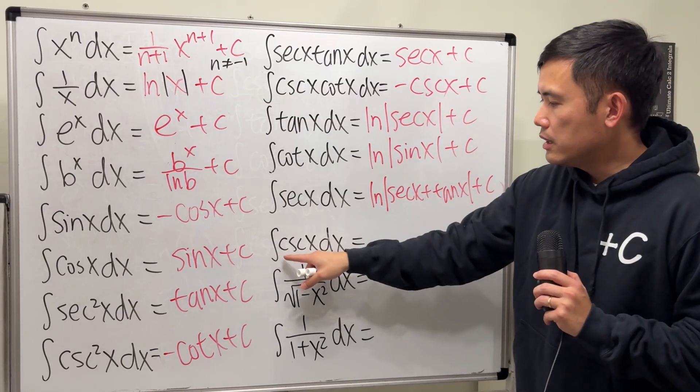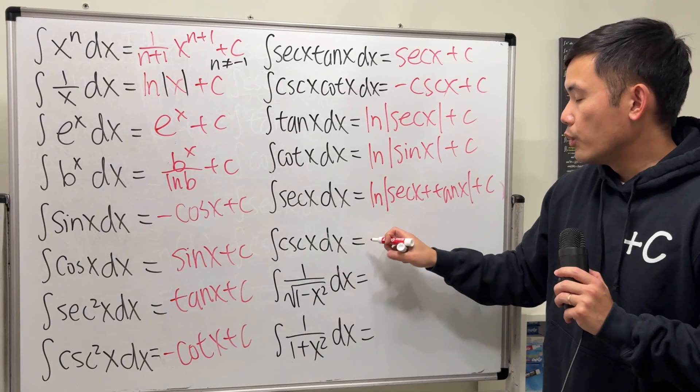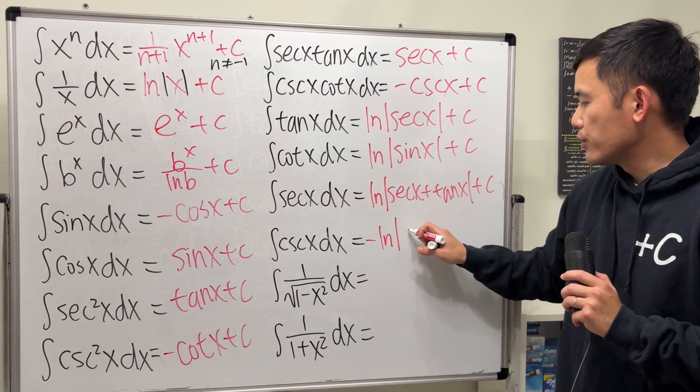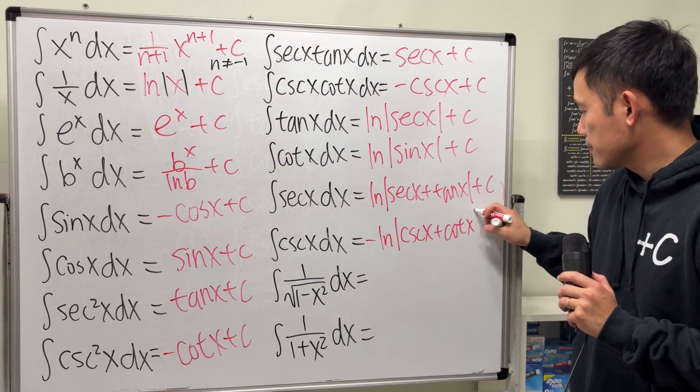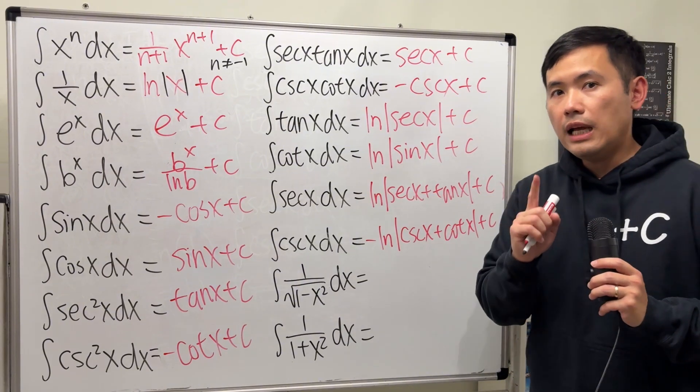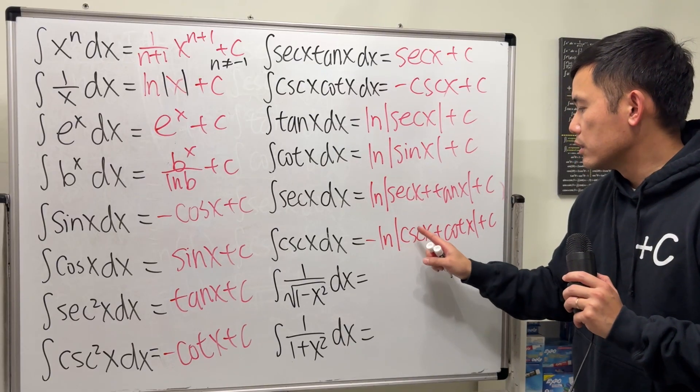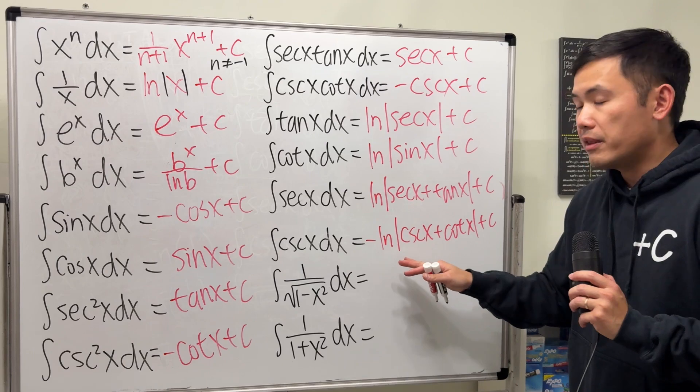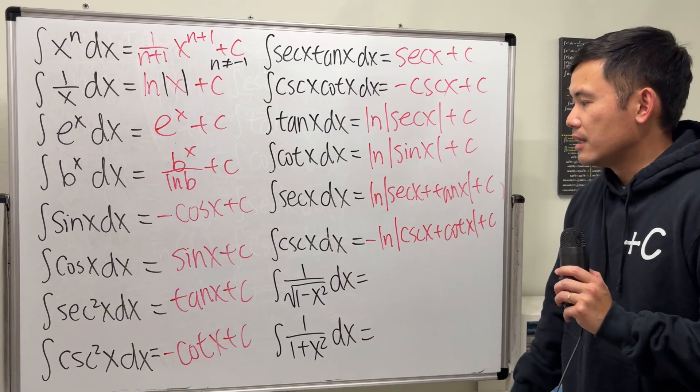Now for the next one, the integral of cosecant x, this right here, the standard answer, what I will say a standard answer is negative ln absolute value of cosecant x plus cotangent x. Now sometimes you may see people write positive ln absolute value cosecant x minus cotangent x. Same thing, they are equivalent. You can try to do some trig identity work to show that.